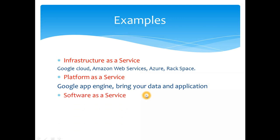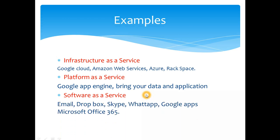For Software as a Service, the most important example is email. You have no control over managing the email service — you just log in to Yahoo, Google, or Hotmail and access it; you are simply the consumer. Other examples are Dropbox, Skype, WhatsApp, Google Apps, and Microsoft Office 365. I hope you now understand the difference between virtualization, cloud, IaaS, PaaS, and SaaS.